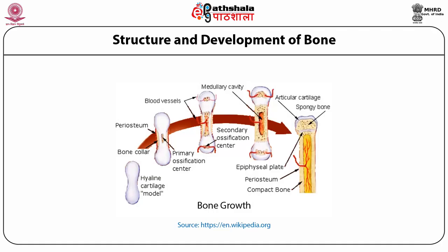Now we see in this diagram on bone growth. First is the hyaline cartilage model — one piece of a bone. When it starts, it shows two primary ossification centers starting from the center, and then we have periosteum at the corner. Then in the third stage, blood vessels start coming in and a secondary ossification center starts at the lower end. Then in the next stage, the medullary cavity is forming, and in the last stage, the epiphyseal plate is developing, along with periosteum and compact bone in the center. The upper end of the bone shows articular cartilage and spongy bone. This is how the bone starts from a hyaline cartilage model and progresses to the final stage where bone formation is completed.